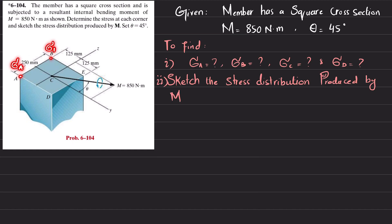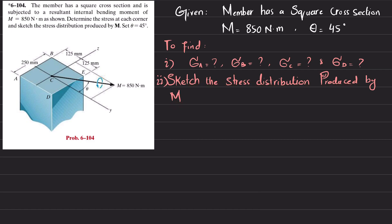You have to find the stress at point A, stress at point B, stress at point D, and stress at point E, and then sketch the stress distribution produced by M. The moment is making an angle theta with the y-axis, so we take one component along the y-axis — that component is counterclockwise and is represented as My.